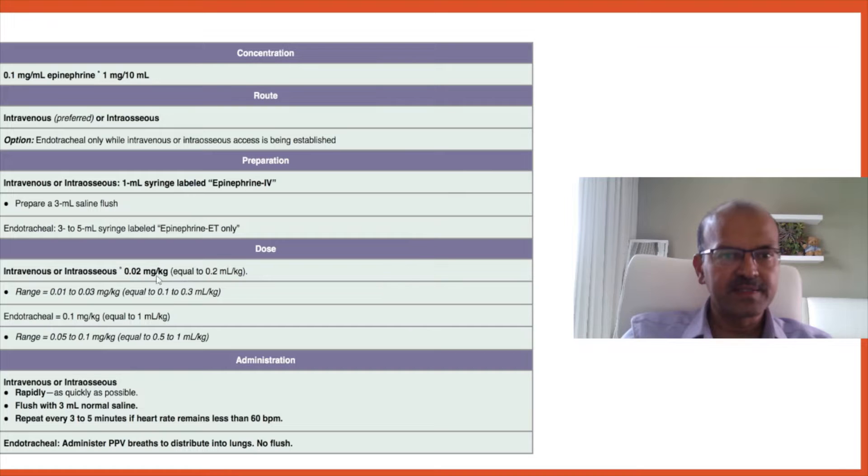Intravenous or intraosseous dose is 0.02 mg per kg, with a range of 0.01 to 0.03 mg per kg. When communicating, be clear whether you're speaking in terms of mg or mL, and stick to that within the team. If you have 1 in 10,000 as the only strength, remembering mL per kg is easier: it's 0.2 mL per kg. The endotracheal dose is 0.1 mg or 1 mL per kg.